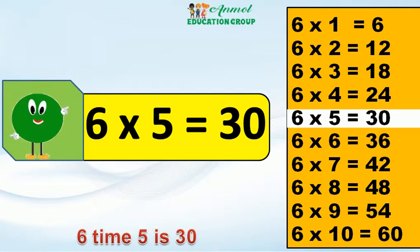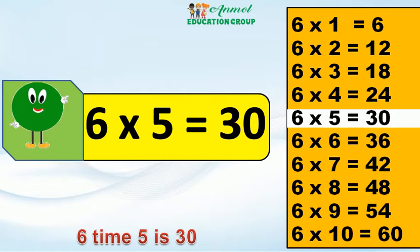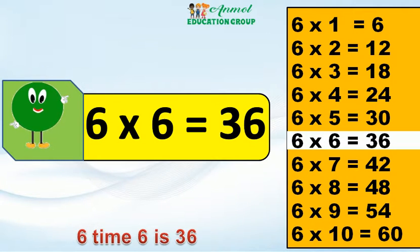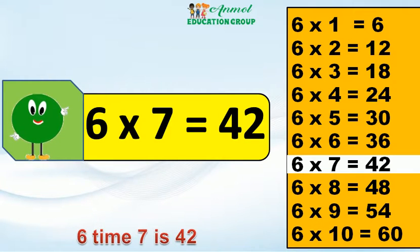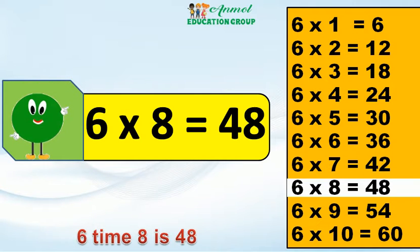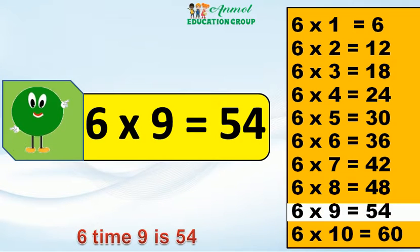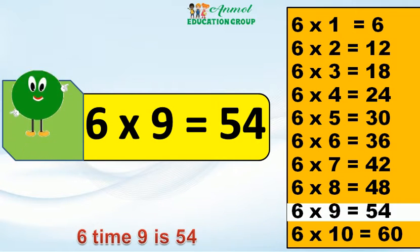6 x 5 is 30. 6 x 6 is 36. 6 x 7 is 42. 6 x 8 is 48. 6 x 9 is 54.